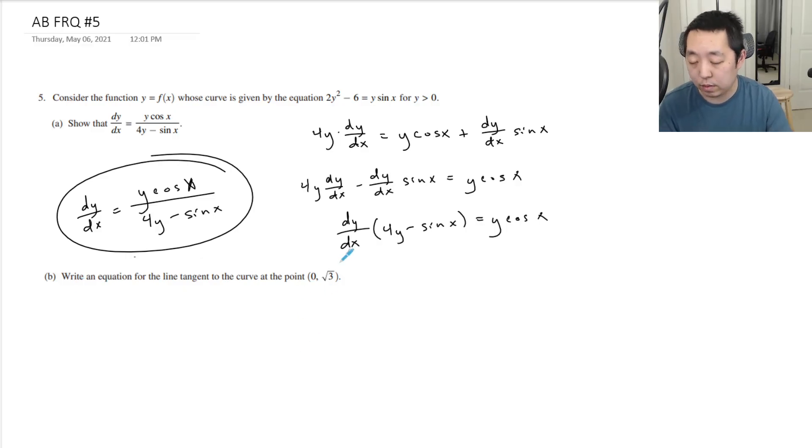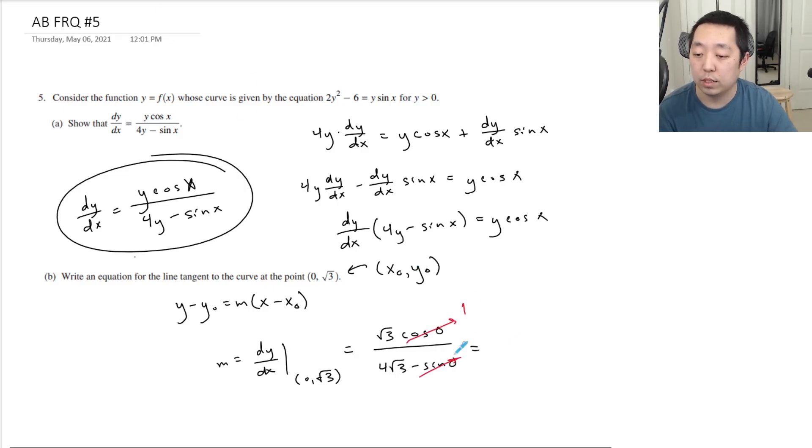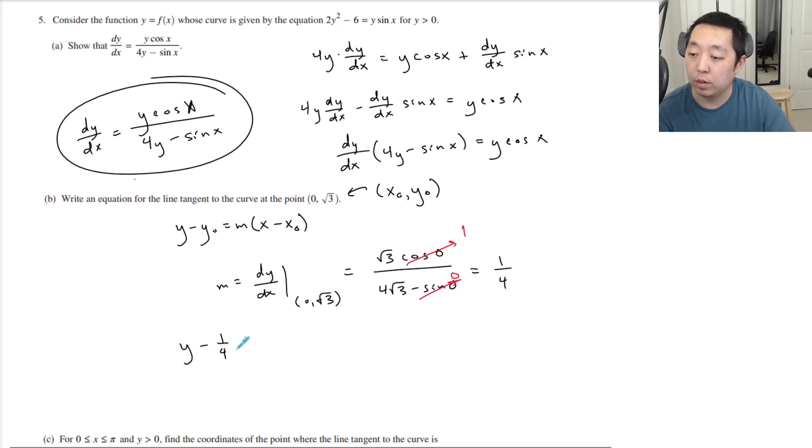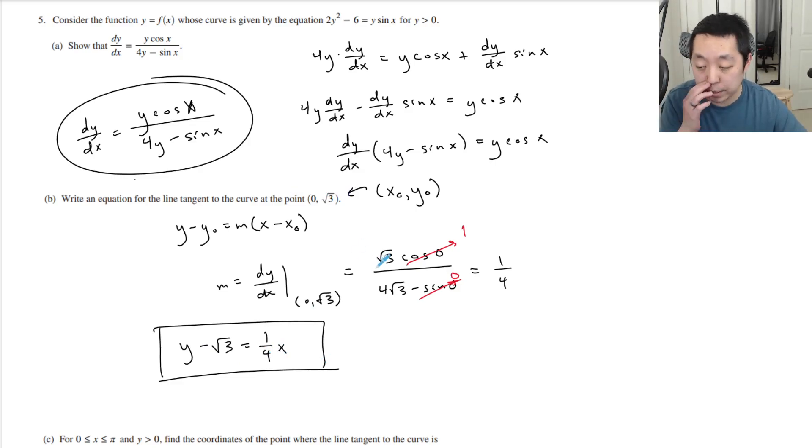Write an equation for a line tangent to the curve at that point. Always use slope point form for tangent lines. Now this is my point. I just need to find the slope. That is the dy dx at the point 0 root 3. So I have the equation of the derivative. So that is y root 3 cosine of 0 divided by 4 root 3 minus sine of 0. Cosine of 0 is 1. Sine of 0 is 0. The root 3's cancel. So I get 1 fourth. So then my equation is y minus root 3 is equal to 1 fourth x. x minus 0 technically, but I don't need to subtract 0. That's it, point and slope.